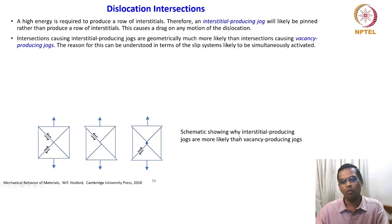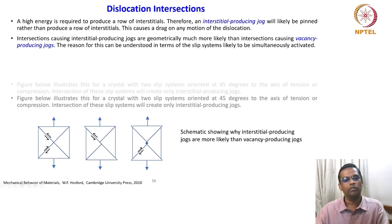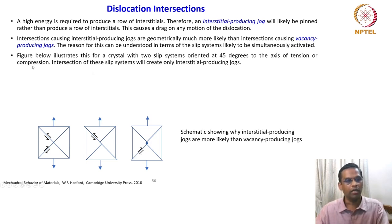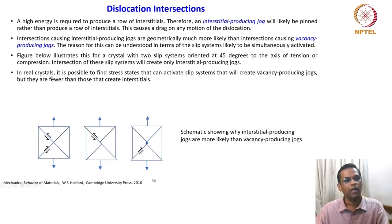The schematic shows why interstitial-producing jogs are more likely than vacancy-producing jogs. The figure illustrates this for a crystal with two slip systems oriented at 45 degrees — one slip system and another — to the axis of tension. The intersection of these slip systems will create only interstitial-producing jogs. In real crystals, it is possible to find stress states that can activate slip systems creating vacancy-producing jogs, but they are fewer than those creating interstitials.